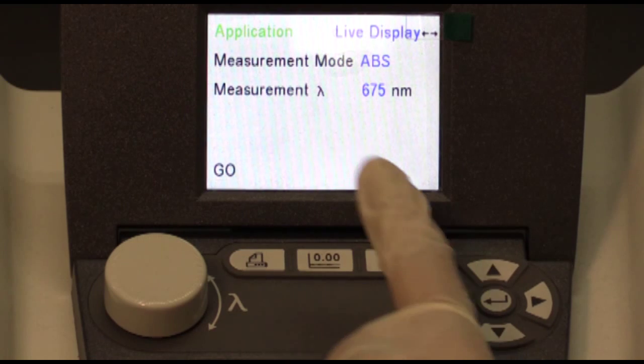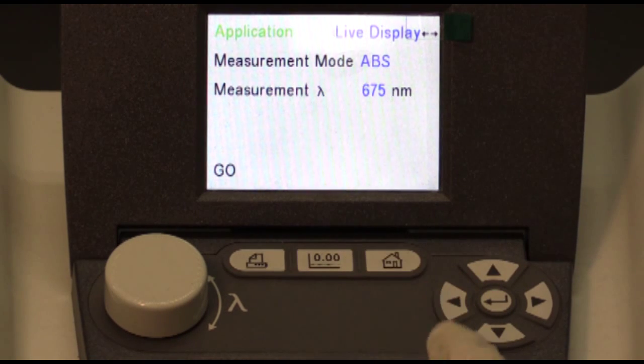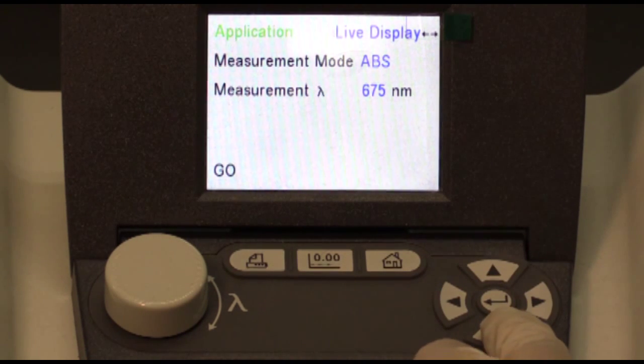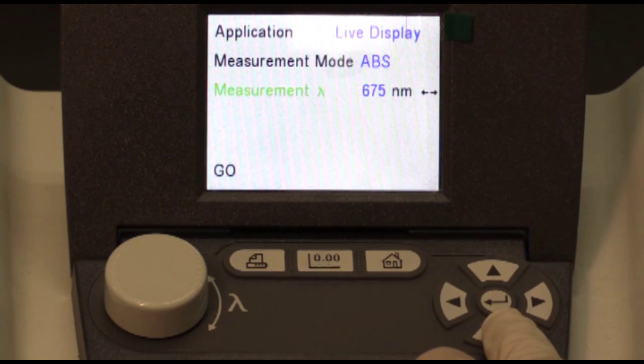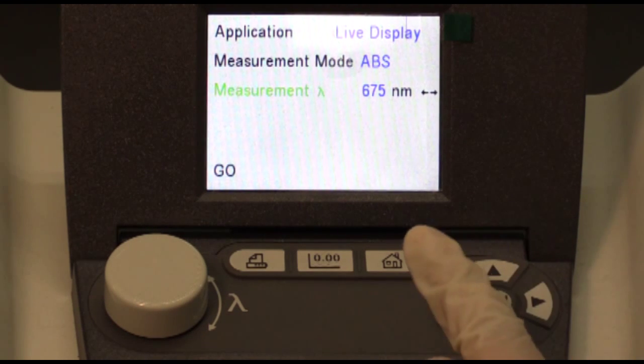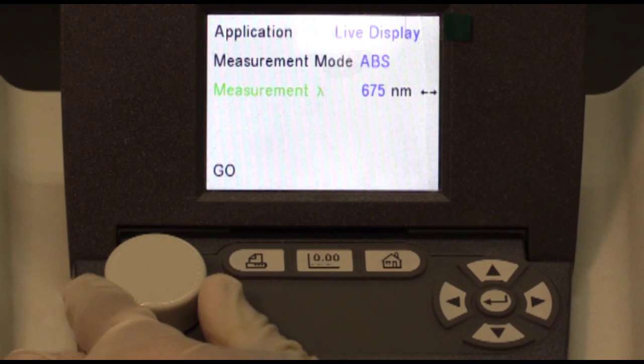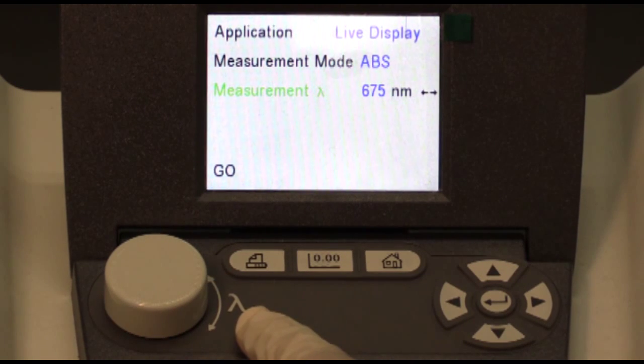Now scroll down and highlight the measurement lambda option. Once it's highlighted, this is where you can adjust the wavelength, and you do that using this dial with the lambda marking on it. For this particular application, we'll be using a wavelength of 686 nanometers.